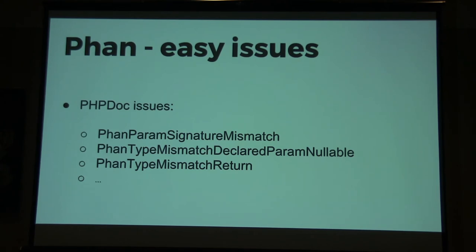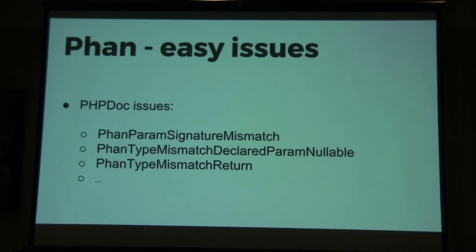Some easy issues you can find with PHPStan include things like a method signature not matching — for example, a parameter is nullable but that's not reflected in the PHPDoc. These are issues that can be fixed by fixing the PHPDocs. We try to use PHPDocs widely across the code, but not everywhere, and sometimes it's wrong because parameters change but the PHPDoc was not updated. Improving this is really valuable because PHPDocs also helps the IDE with correct auto-completion.